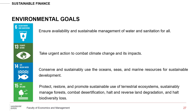Life below water means we need to conserve and sustainably use oceans, seas, and marine resources — we shouldn't overfish or pollute oceans. Climate change will increase ocean temperatures, leading to loss of biodiversity and marine habitats; for example, coral reefs are affected by rising temperatures. Life on land means we need to protect, restore, and promote the sustainable use of terrestrial ecosystems, sustainably manage forests and soils, combat desertification, reverse land degradation, and halt biodiversity loss.